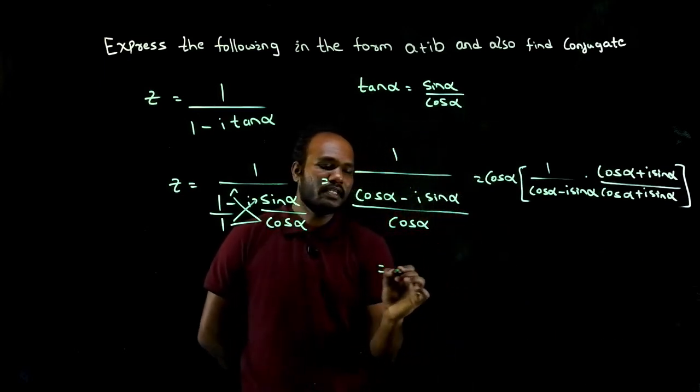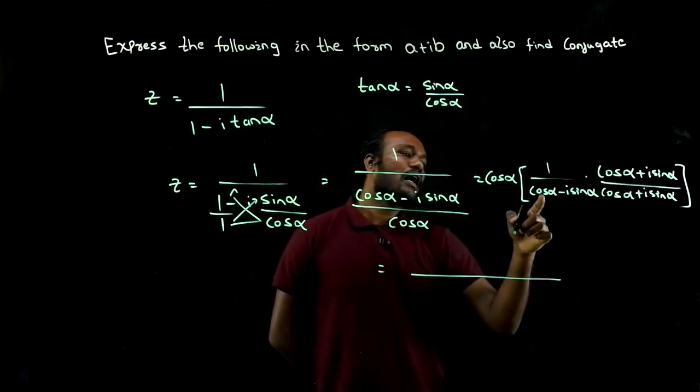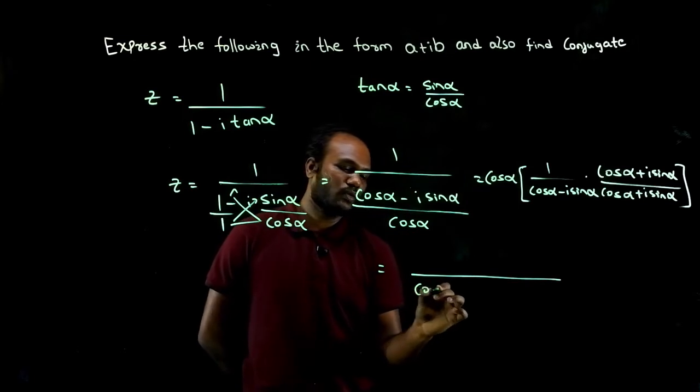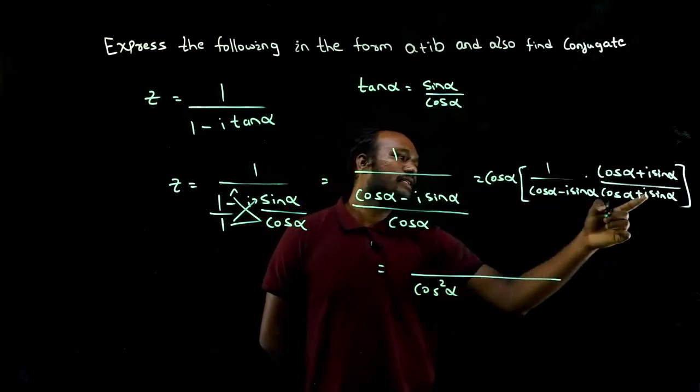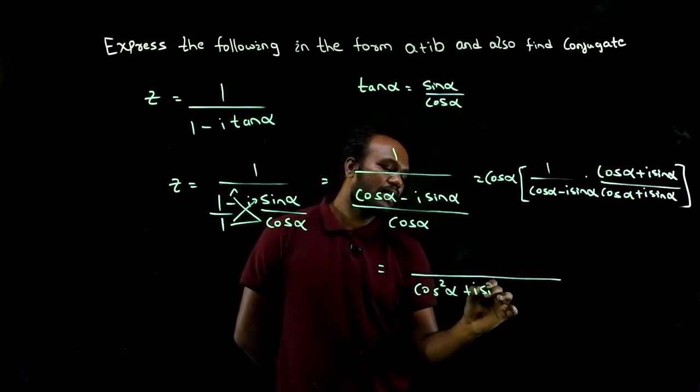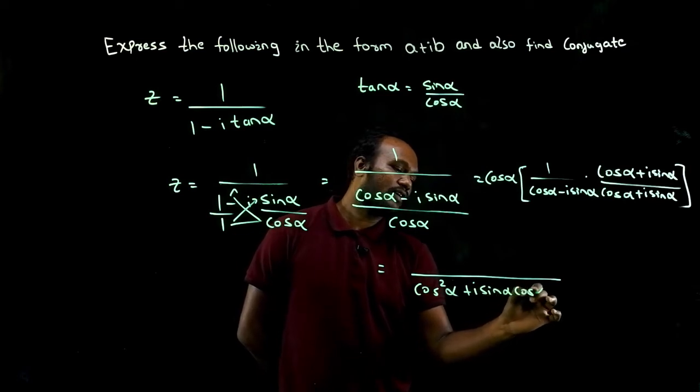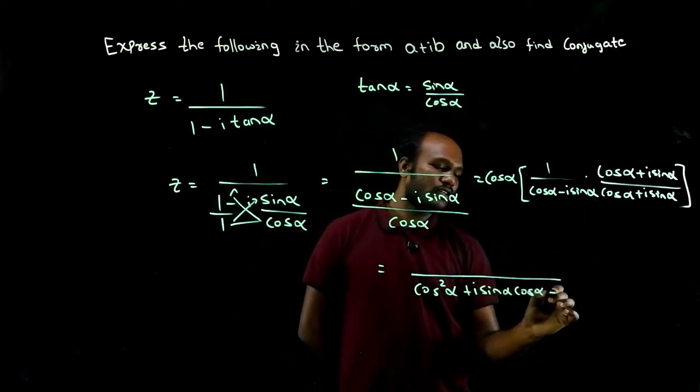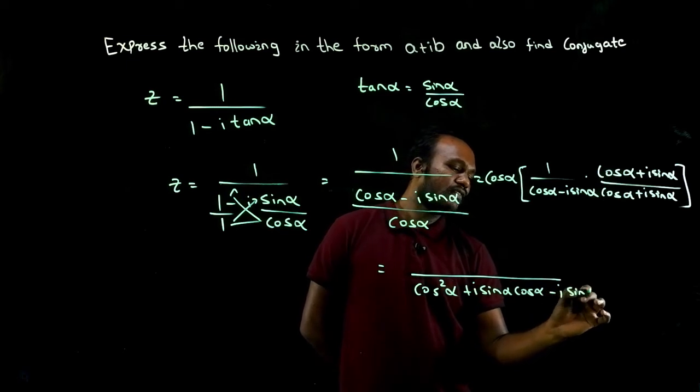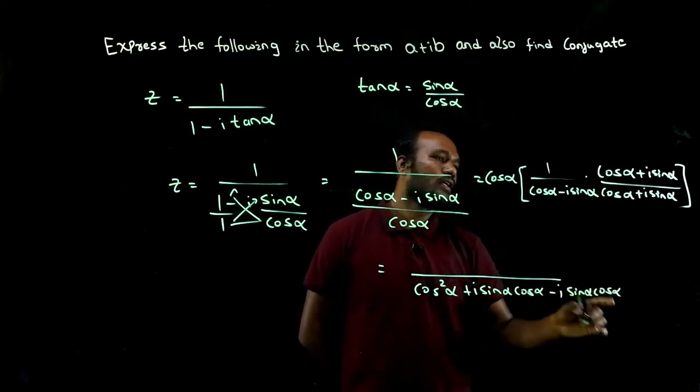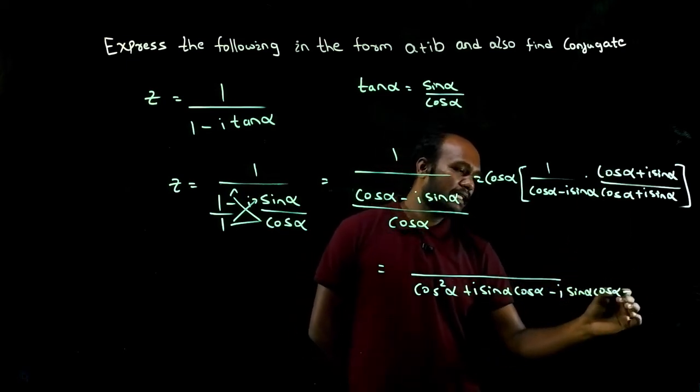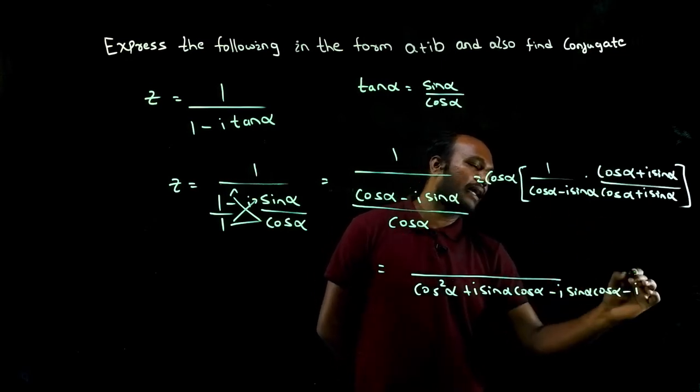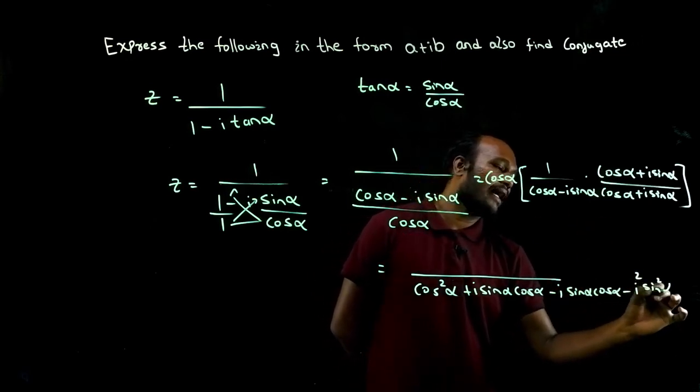Okay, so in the denominator: cos into cos is cos square alpha, cos into I sine alpha is I sine alpha cos alpha, minus sin plus is minus I sine alpha cos alpha, and minus into plus is minus I square sine square alpha.